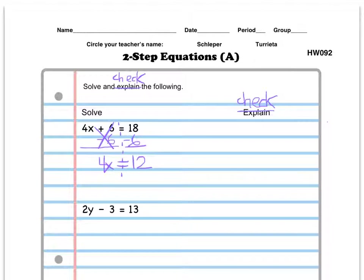Second step is I need to get rid of the 4 that's attached to the x. This 4 is attached by multiplication, so I'm going to divide both sides by 4. I'll end up with 4 divided by 4 is 1, and 1 times x leaves me with plain old x. I'll extend my boundary here, and x is equal to 12 divided by 4, which is 3. So there's your answer.